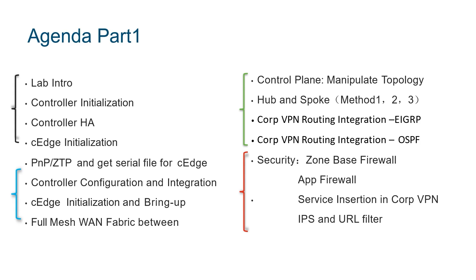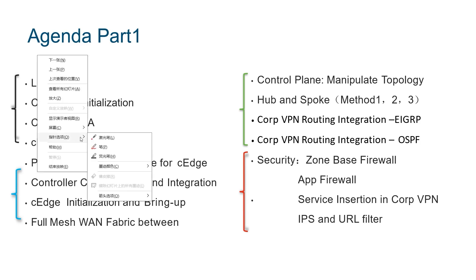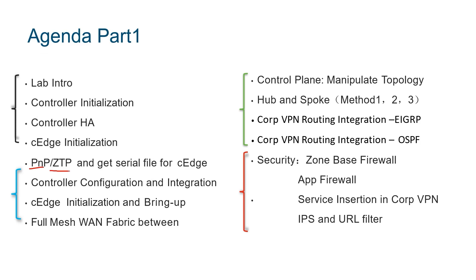After completing the entire environment initialisation, we need to proceed with bringing our C-Edge online, which we call onboarding. There are two ways: PMP or ZEP. ZEP uses Cisco's backend cloud servers to inform our C-Edge and V-Bond of their locations, enabling junior engineers to complete onboarding tasks. PMP, especially for hardware devices, allows quick onboarding using a USB drive or email.